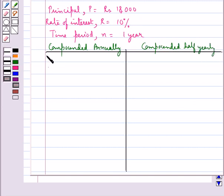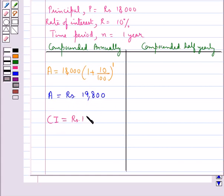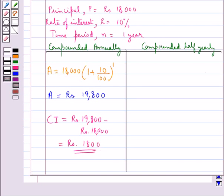When the rate of interest is compounded annually, the amount A is equal to the principal 18,000 into 1 plus 10 upon 100, whole to the power 1. Doing this calculation, we get the amount A equal to rupees 19,800. So the compound interest CI is equal to rupees 19,800 minus the principal rupees 18,000, giving a compound interest of rupees 1,800.